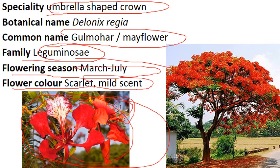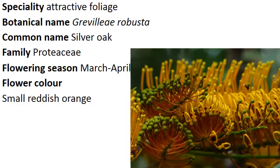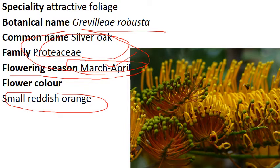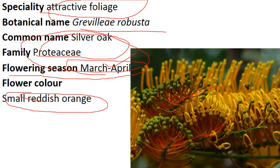It has umbrella-shaped crowns. Next one: Grevillea robusta. Common name is Silver Oak. Family is Proteaceae. Flowering season is March to April, summer season. Flower color is small reddish-orange — you can see the reddish-orange color here. It has attractive foliage and is very beautiful. Don't confuse silver oak with the oak tree — oak tree has genus Quercus and family Fagaceae, but silver oak has family Proteaceae.